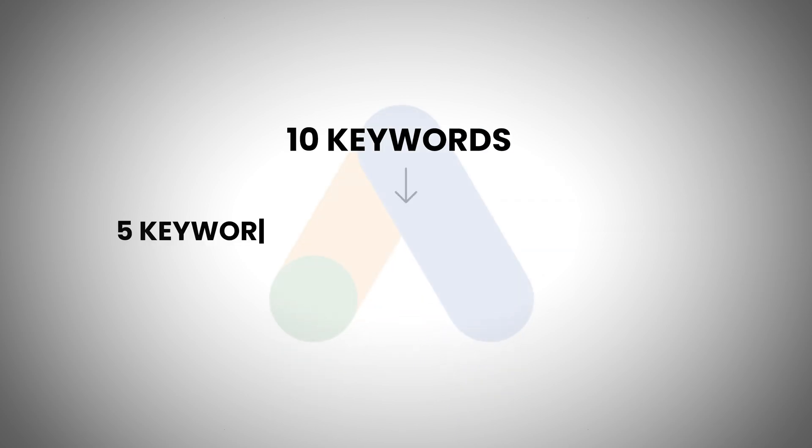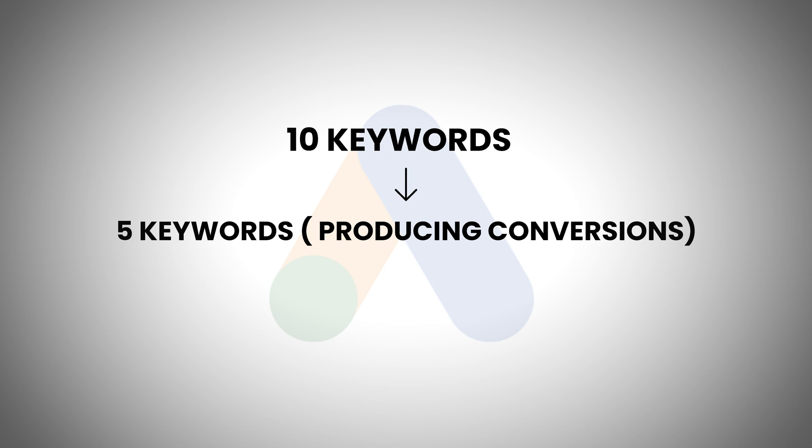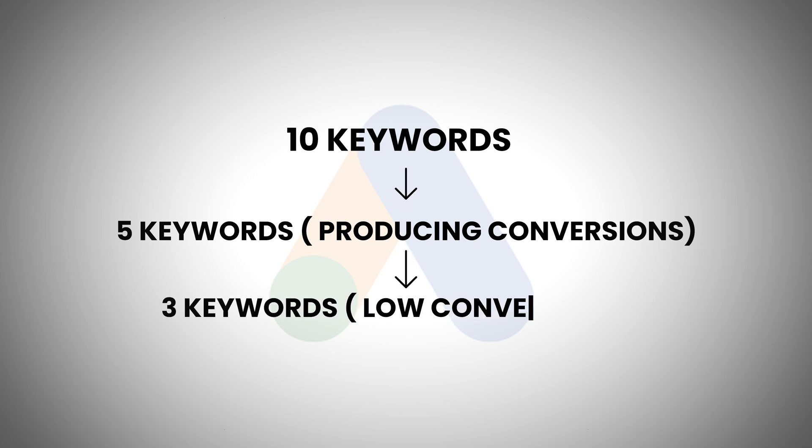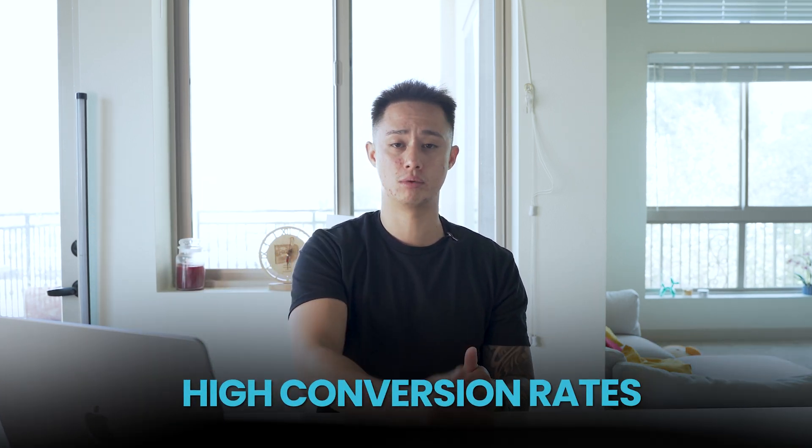Let your ads run, give it some time, and get some data. Then you can start seeing which keywords are producing leads and which aren't producing conversions for you. Go ahead and pause out whatever keywords aren't producing conversions or where the cost per lead is just too high. Let's say you have 10 keywords and five are producing conversions — out of those five, maybe three have a really low conversion rate, so you'd pause those. Then keep your best keywords: the ones with a high conversion rate and the lowest cost per lead. Leave what's working on and turn off what's not.